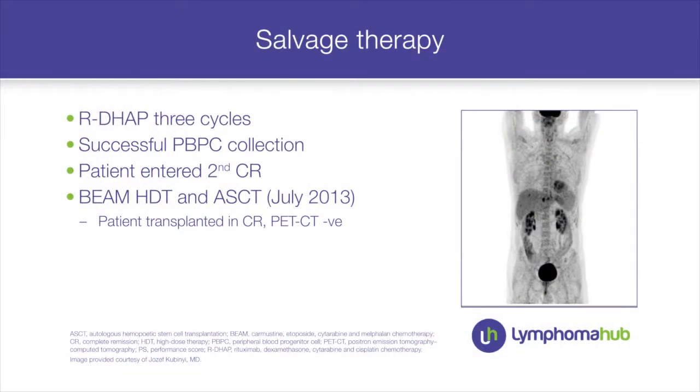With no other options, we started salvage treatment and planned an autologous stem cell transplant. We administered three cycles of rituximab plus DHAP protocol. We successfully collected peripheral stem cells, and fortunately the patient entered a second complete remission. In July we performed high-dose BEAM chemotherapy followed by autologous stem cell transplant, with the patient transplanted in complete remission — PET negative.